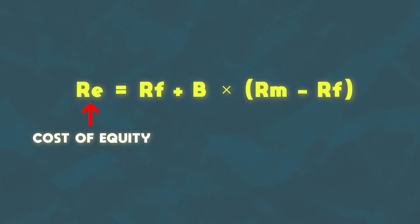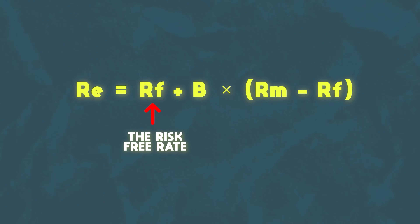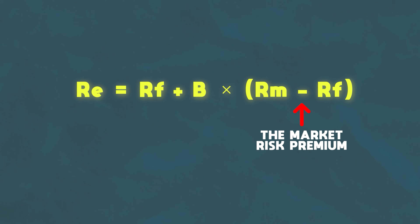First, let's take a look at the components that make up the cost of equity formula, which says: cost of equity equals the risk-free rate plus beta times the market risk premium. So let's explain each of the variables in this formula.